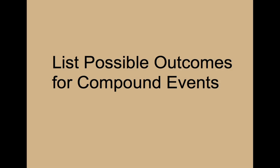Hi, Kipsters. We're going to proceed with our series on probability by talking about how we list possible outcomes for compound events. Listing means to actually write them all out. Possible means what can actually happen, and outcomes are just another word for results. Compound events are events where you have more than one event — two or more events.